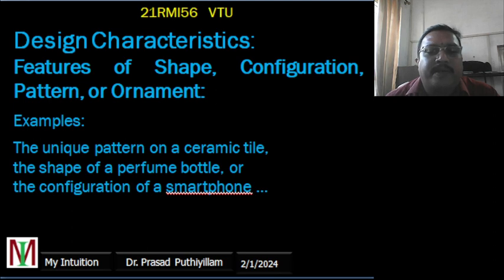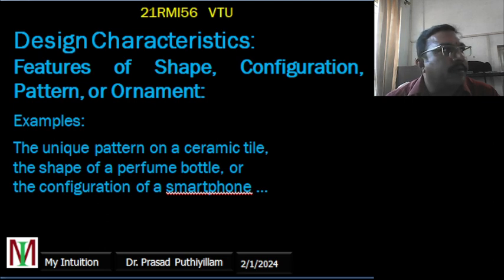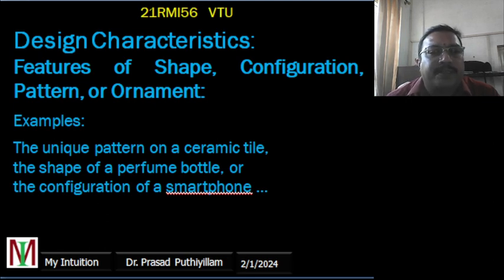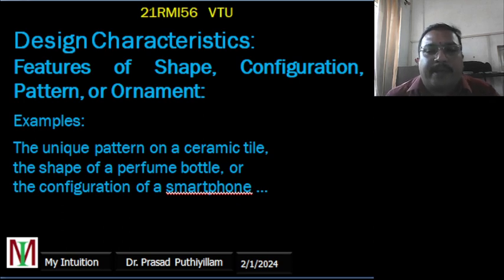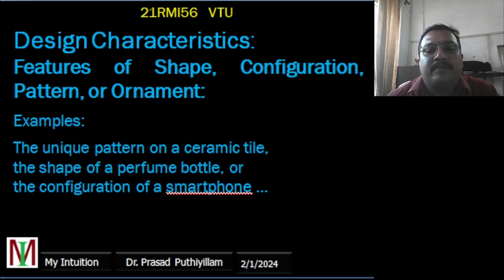For example, the unique pattern of a ceramic tile: all tiles have the same function, but if the function, strength, and durability are the same, then the unique pattern becomes important and must be protected through design rights. Similarly, the shape of a perfume bottle or the configuration of a smartphone are examples of distinct features eligible for design protection.